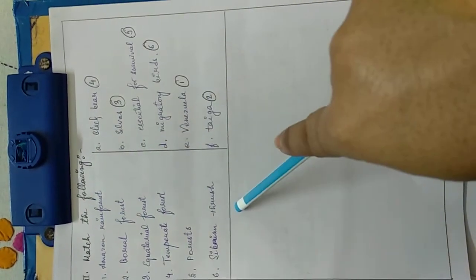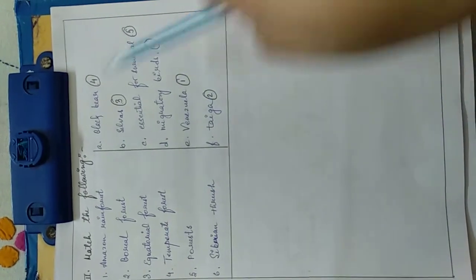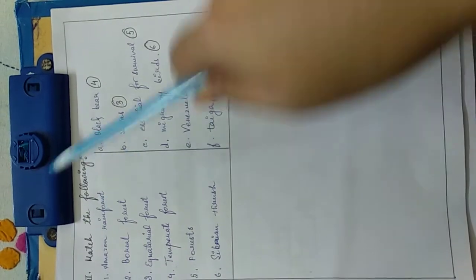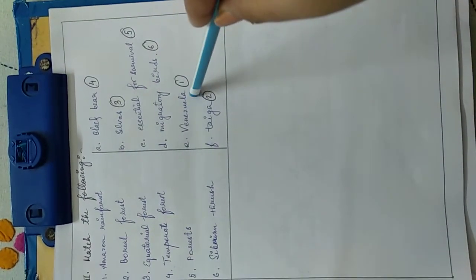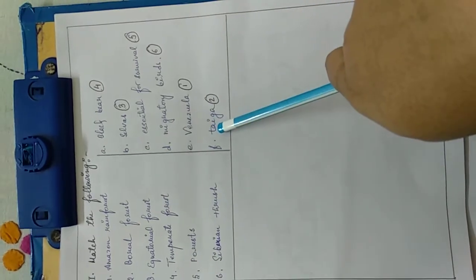So these are the six forest types, name of a bird, and here are the six options. Now we have to match it. So which does the Amazon rainforest go with? It is situated, or we can find it, in Venezuela. Boreal forest. Yes, named as taiga.